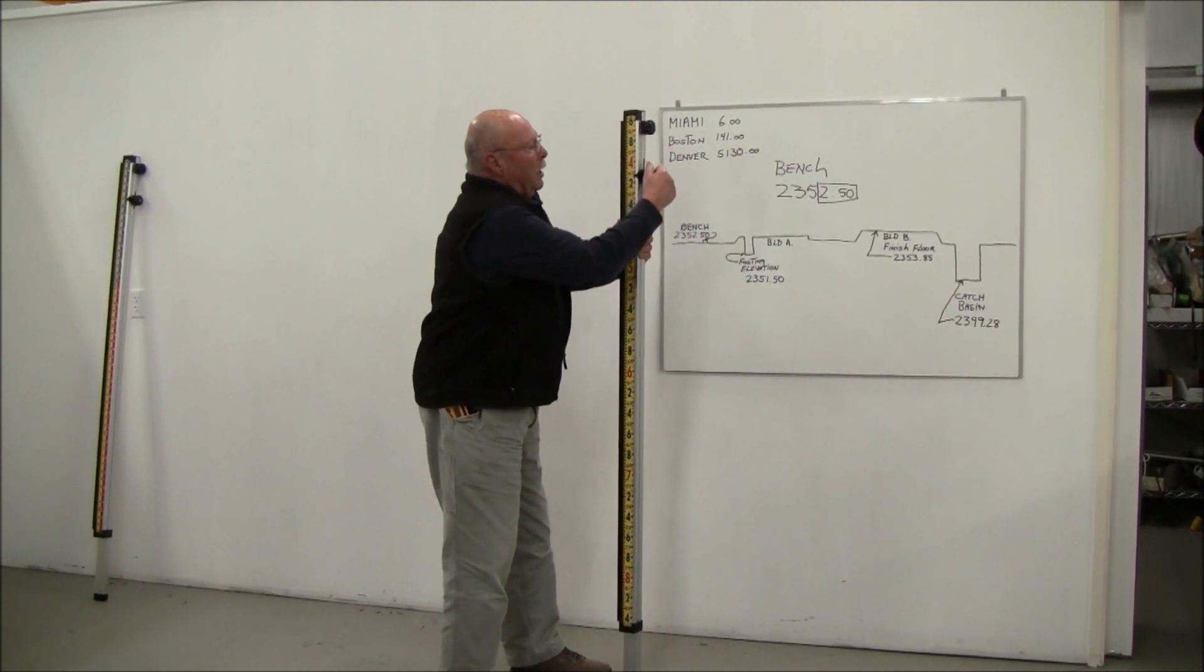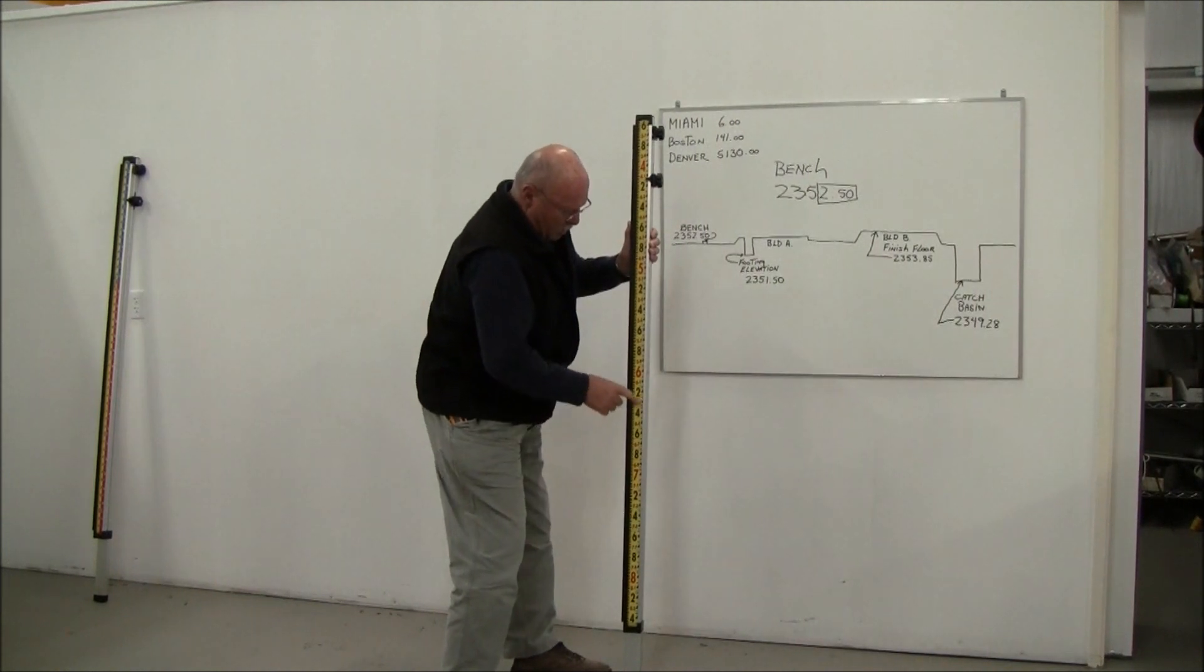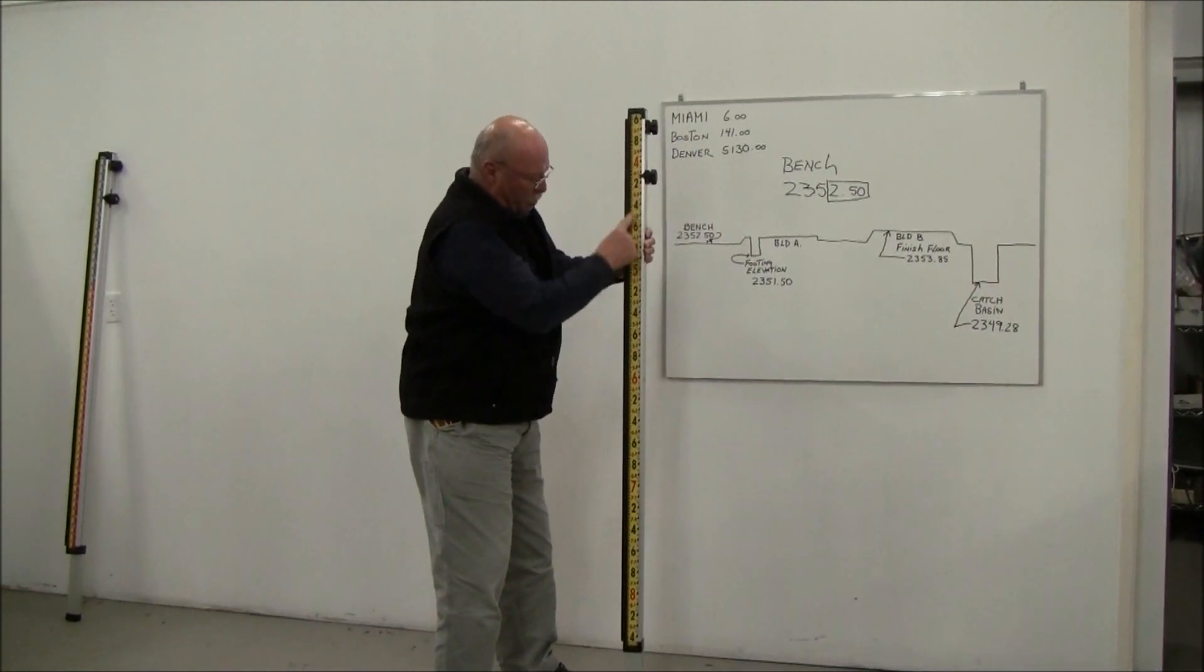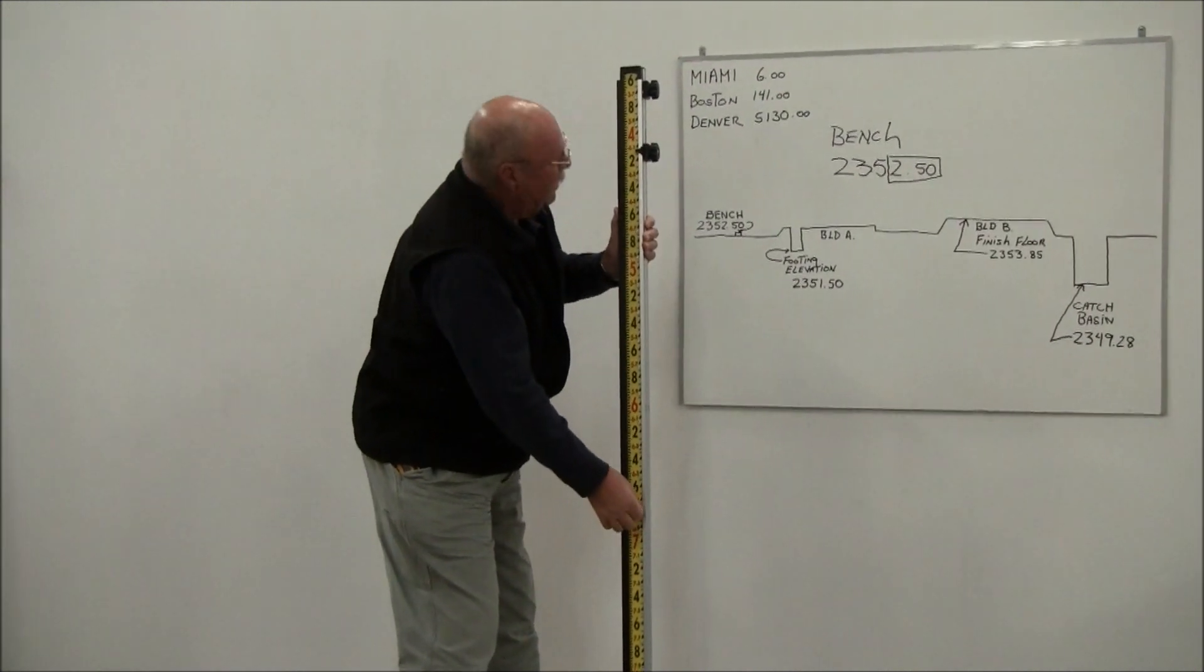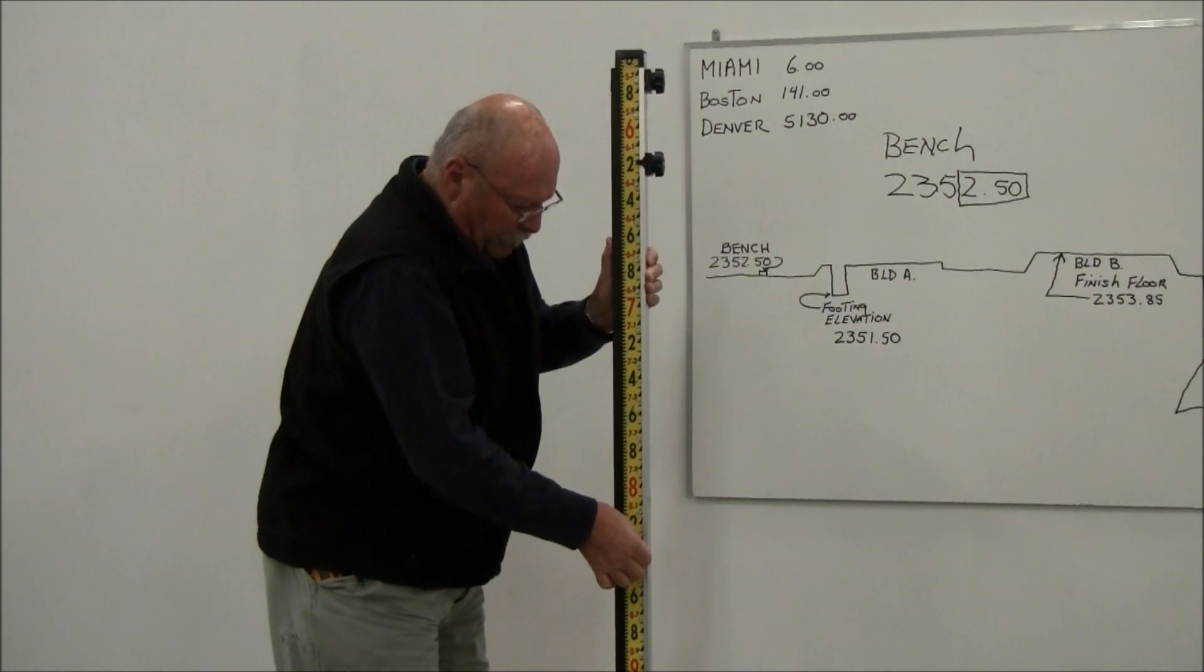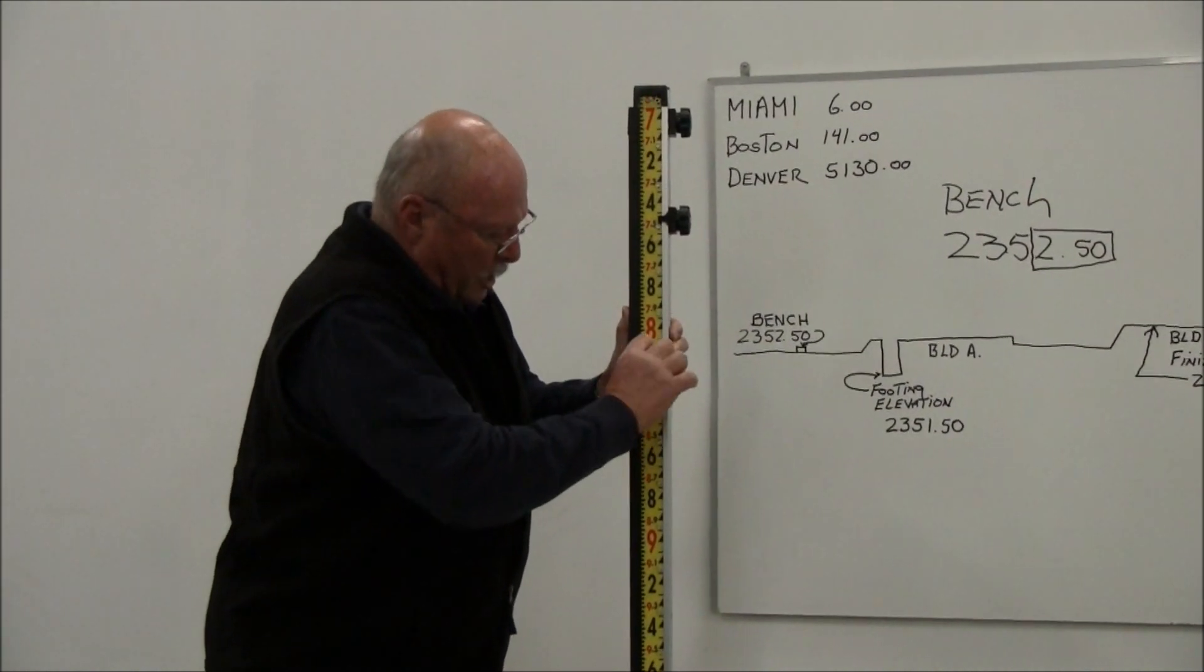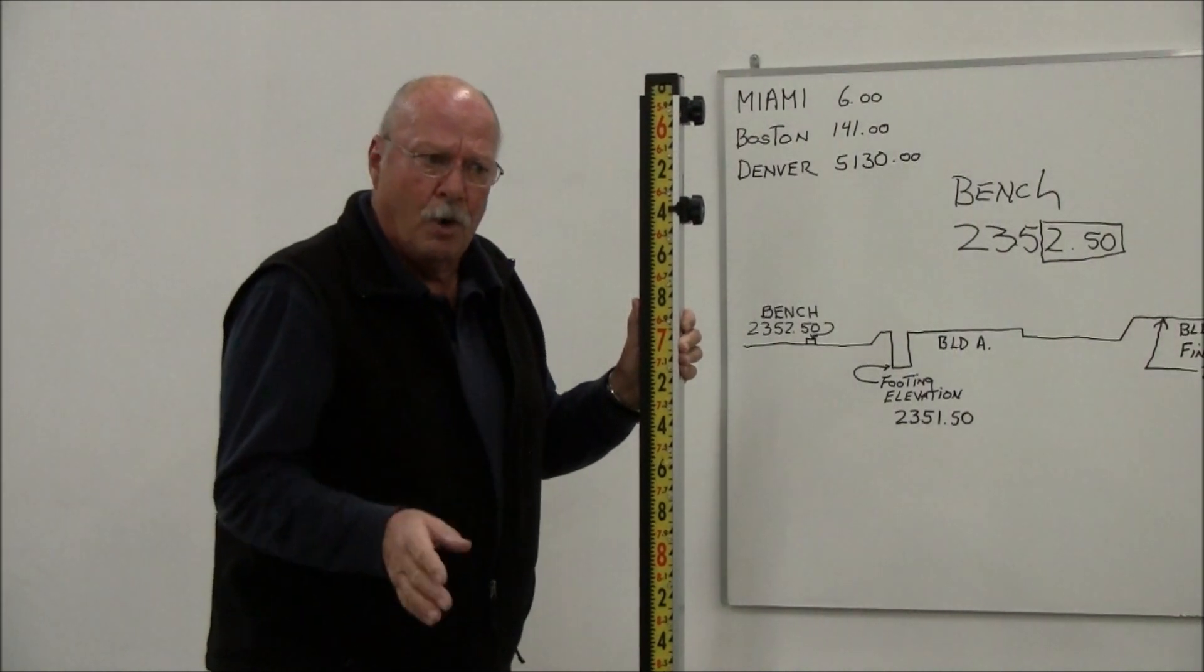The first thing you'll notice about this grade rod is that the numbers are not going the same way as a normal grade rod. You have four feet, five feet, six feet, seven feet. The other thing is this has a movable tape. What that tape does is by moving it, we're going to be able to set our bench elevation into the rod.